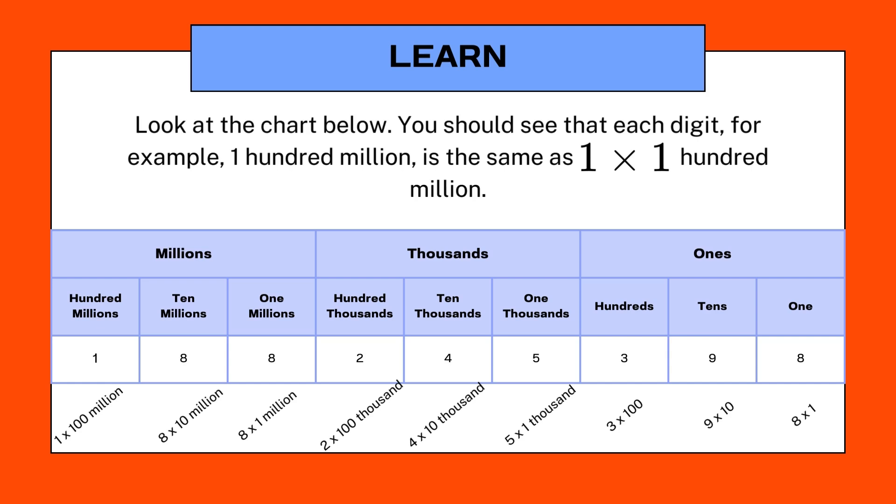Take a look at the chart below. You should see that each digit, for example 100 million, is the same as 1 times 100 million.